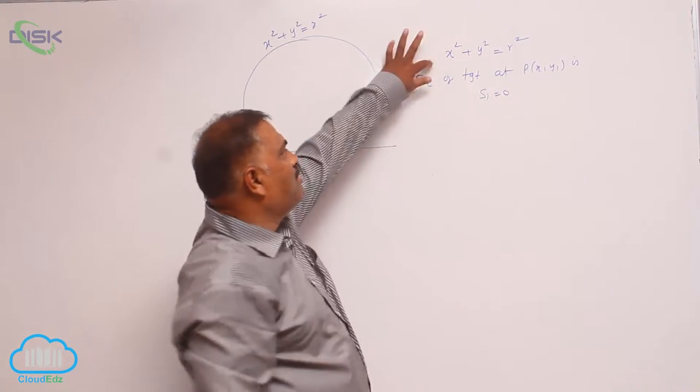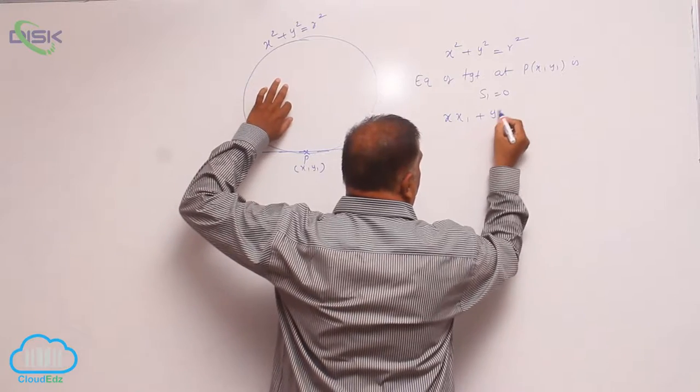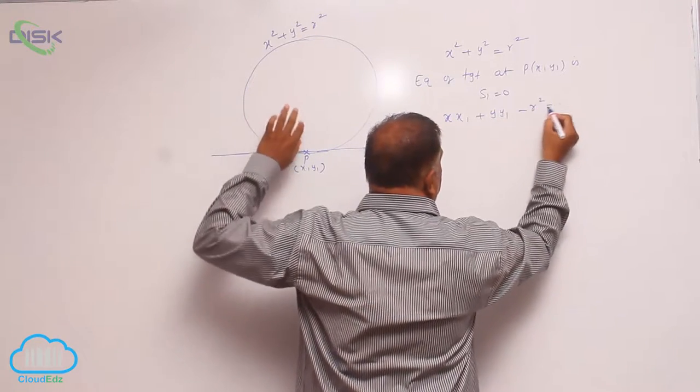How to write S₁ now? This is xx₁ + yy₁ - r² = 0.